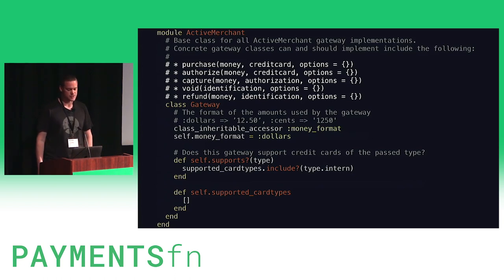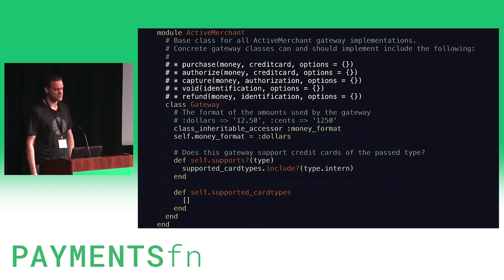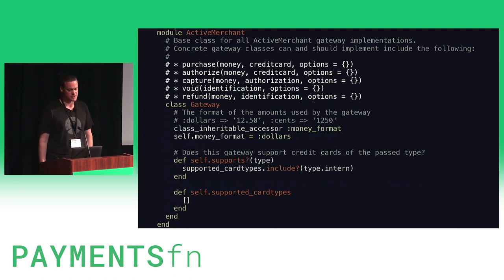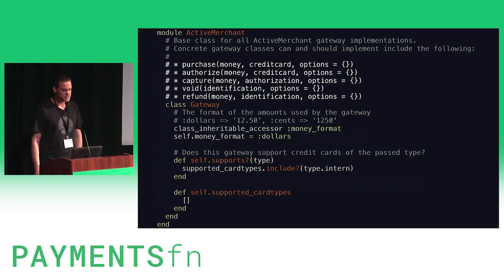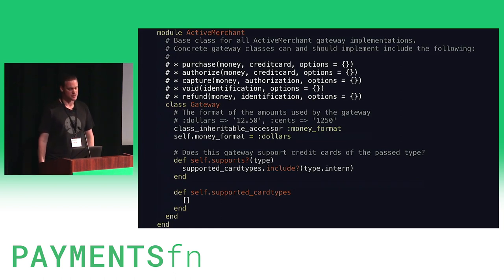This is a stripped-down version of the initial gateway class that everything extends from. But really, it's more of a spec than a true object-oriented abstraction — it didn't have a definition for those purchase, authorize, or capture methods. Instead, it was up to you to implement them when you were implementing your gateway. This made it really easy for newcomers to add new providers, since they only needed to implement the parts that mattered for their gateway. It also meant the code using Active Merchant needed to know a bit about the gateway it was calling, which isn't necessarily a bad thing when you're dealing with payments.